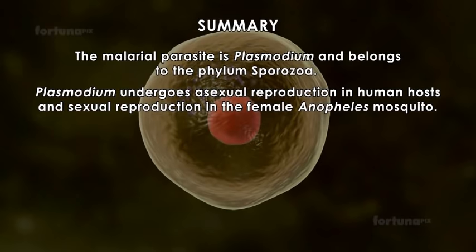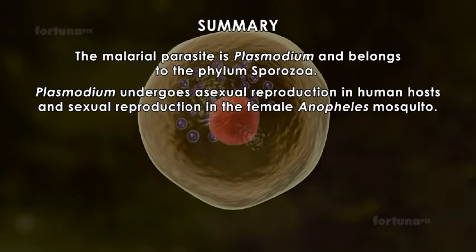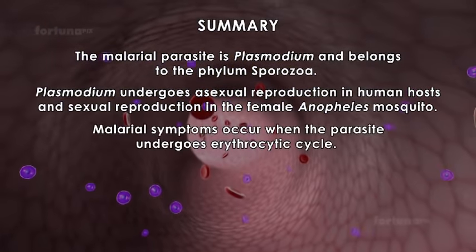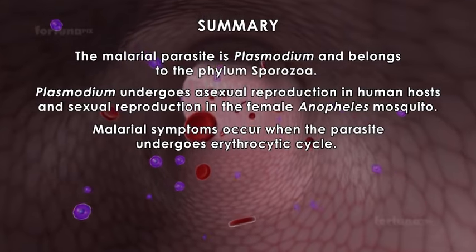And sexual reproduction in the female Anopheles mosquito. Malarial symptoms occur when the parasite undergoes erythrocytic cycle.